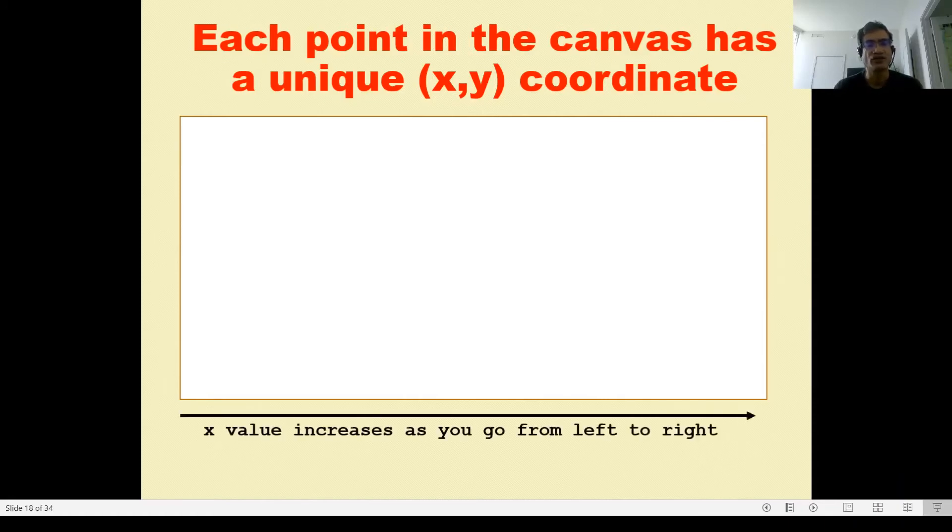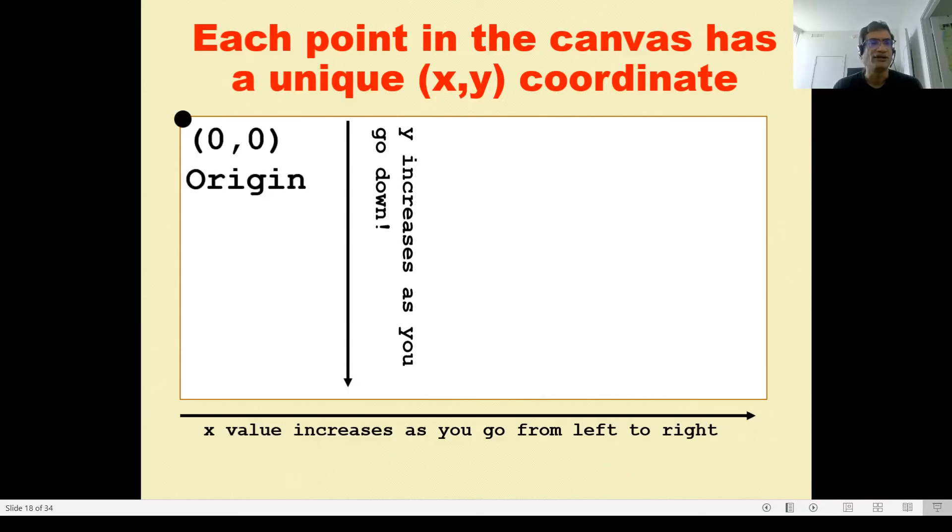How does this work? The x-axis increases as you go left to right. If you've done any coordinate geometry or analytical geometry in your high school or wherever you've done math, you would have seen this. This is very typical—x value increases as we go from left to right. But for a computer canvas, this is different, so pay attention. The y value actually increases as you go down. This is not how what you learned in your coordinate geometry class.